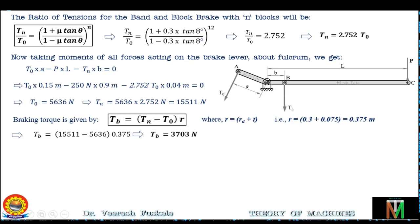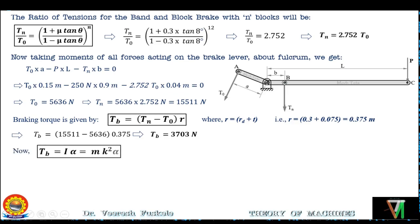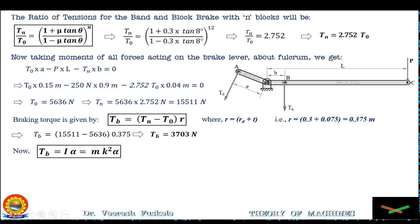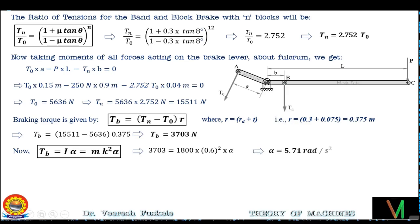Next, we calculate angular retardation. Braking torque Tb = I × alpha = m·K² × alpha. Substituting Tb = 3703, m = 1800 kg, K = 0.6 m: 3703 = 1800 × 0.6² × alpha. This gives alpha = 5.71 rad/s². The angular retardation of the drum is 5.71 rad/s².